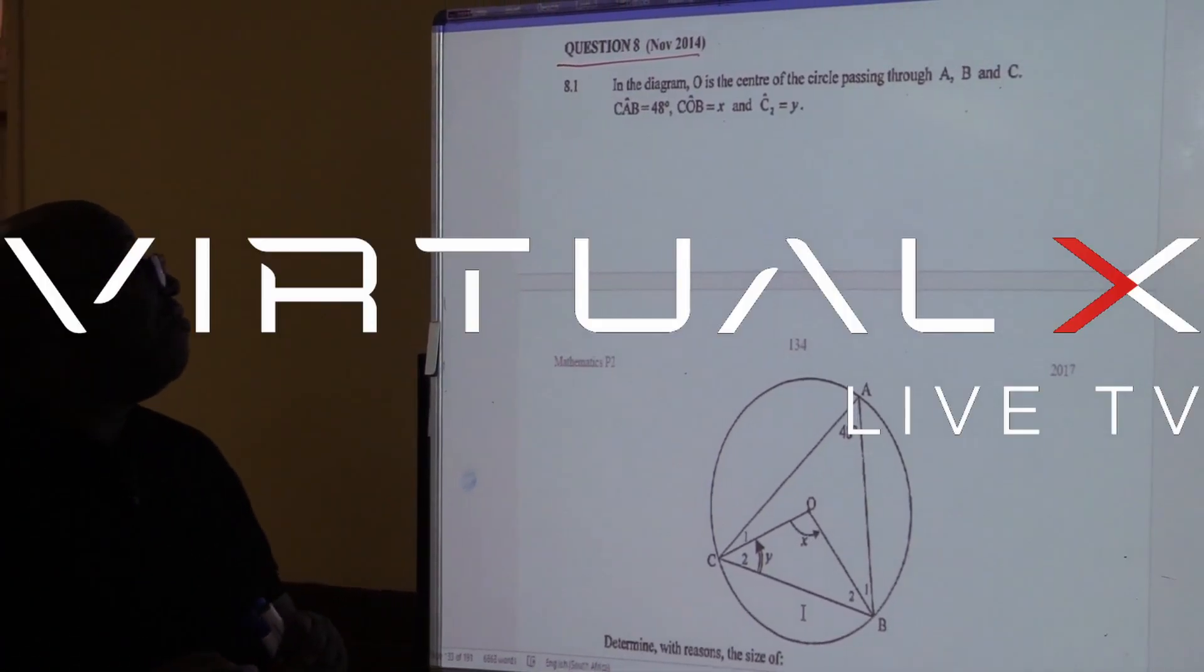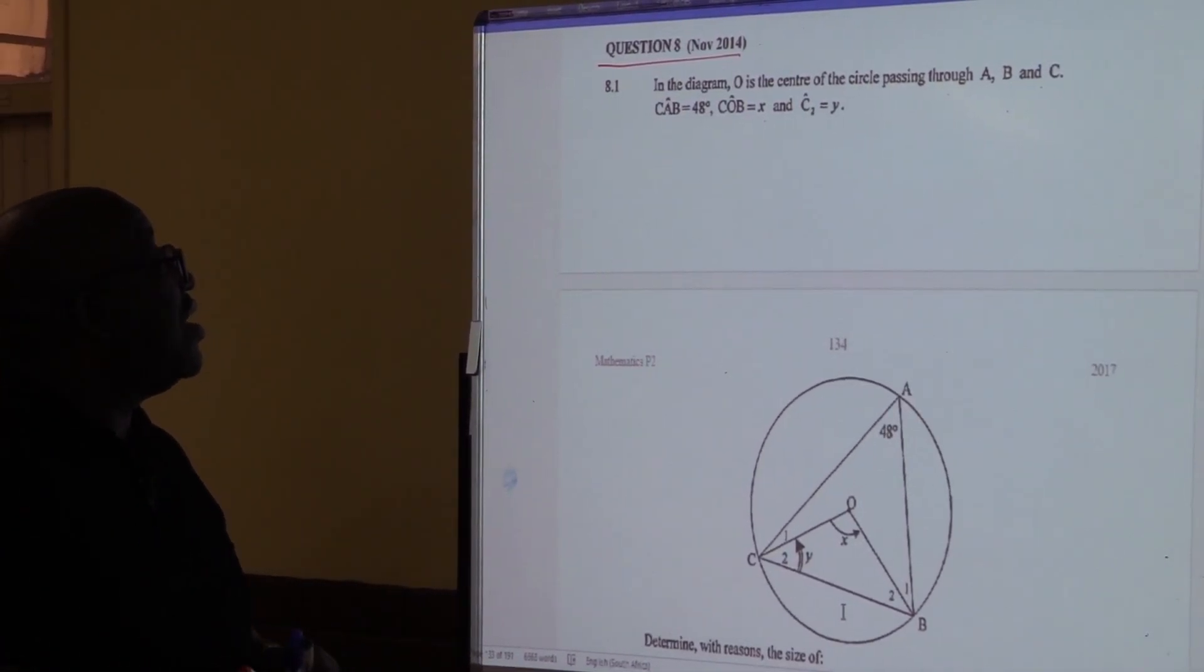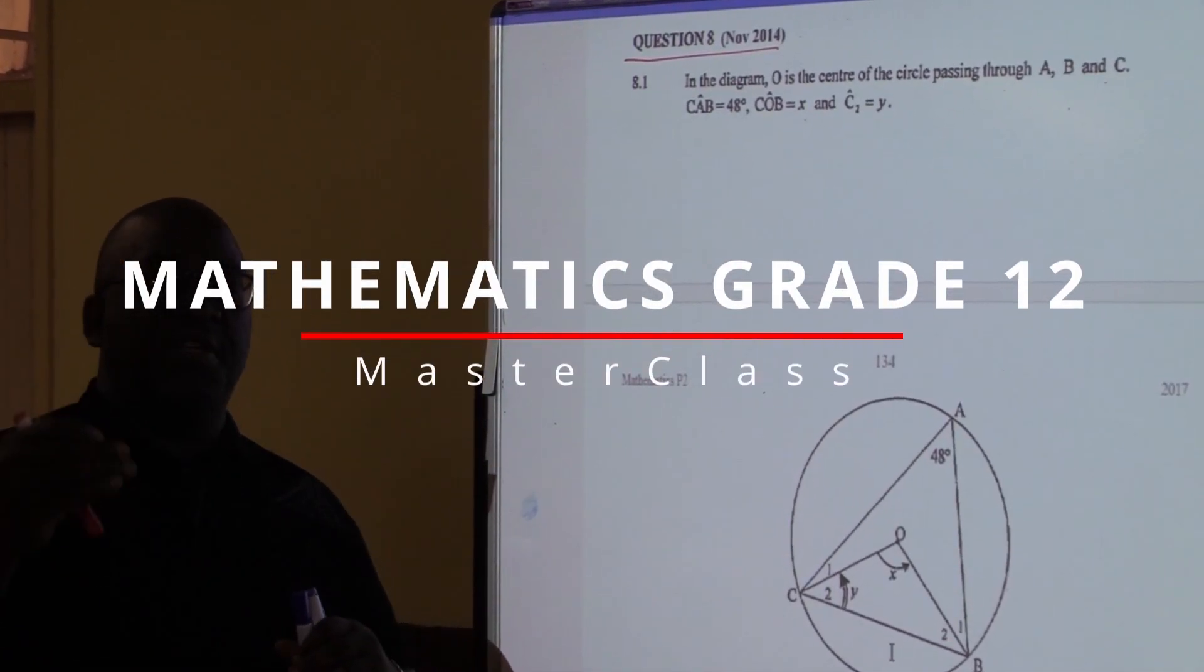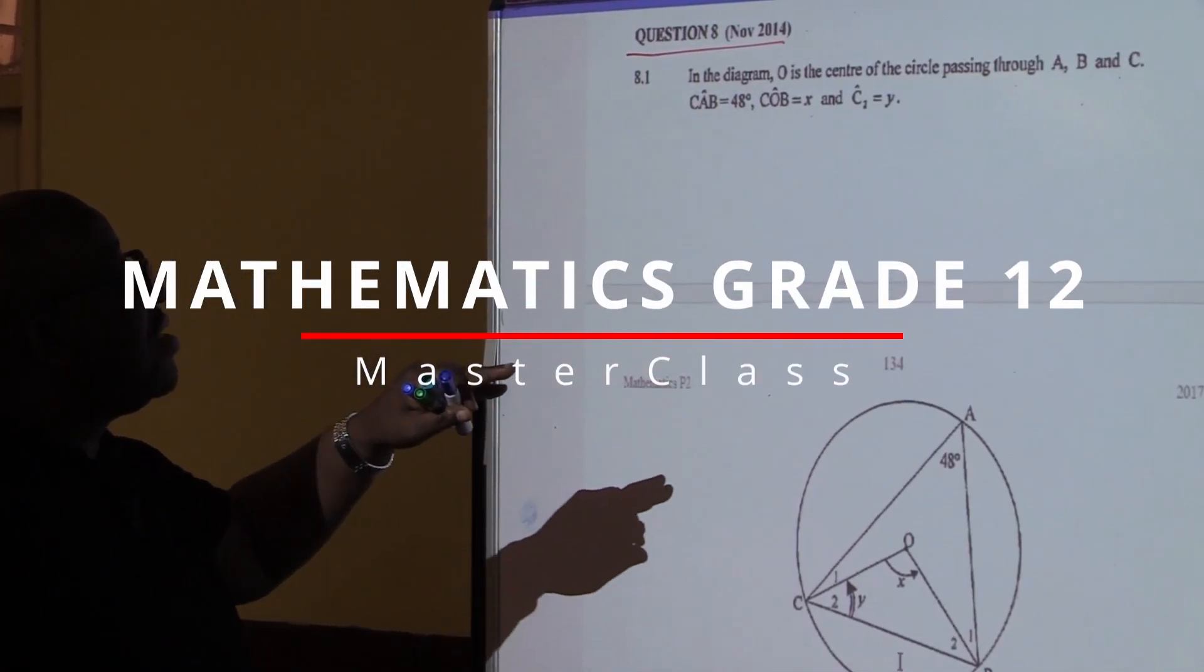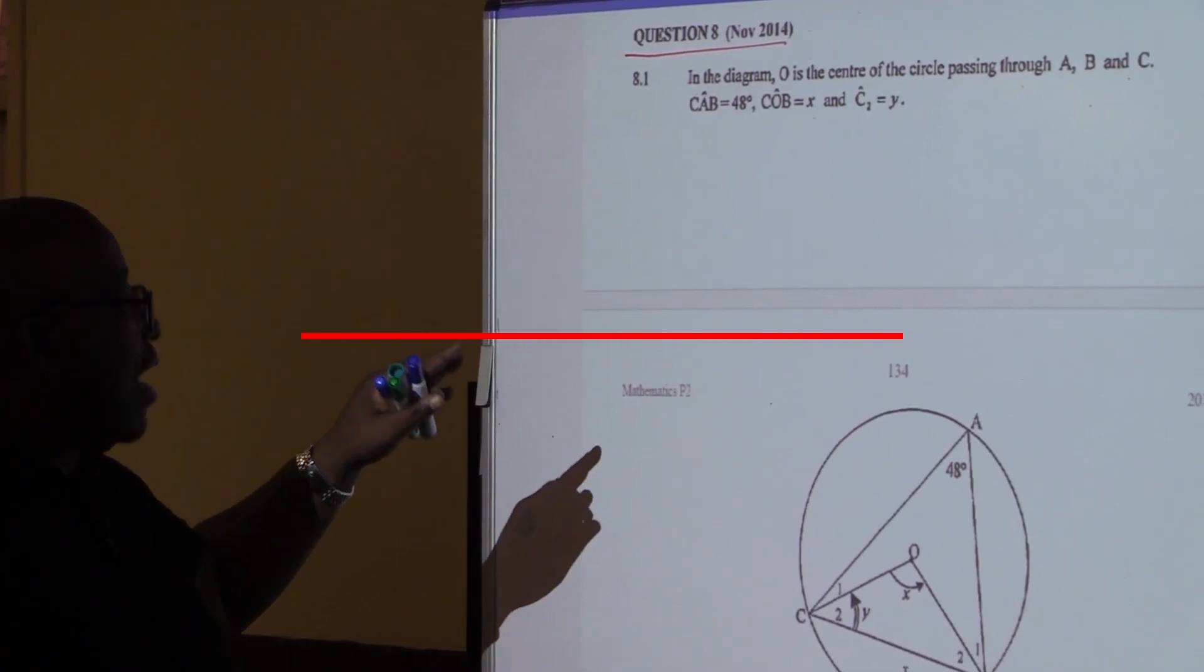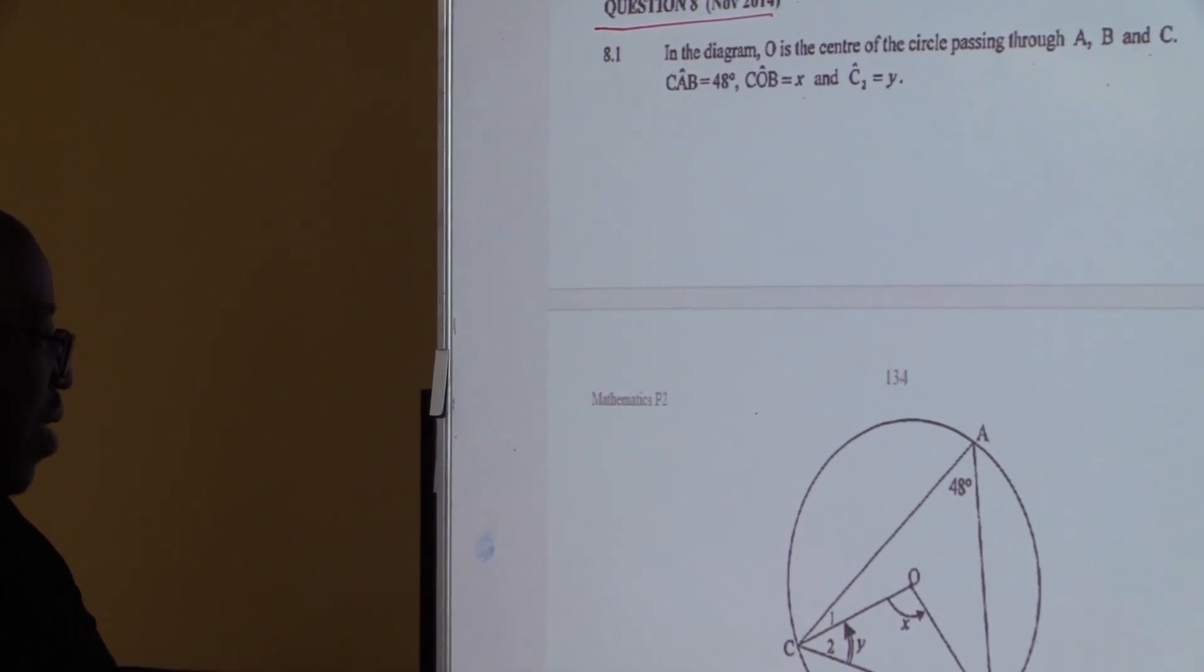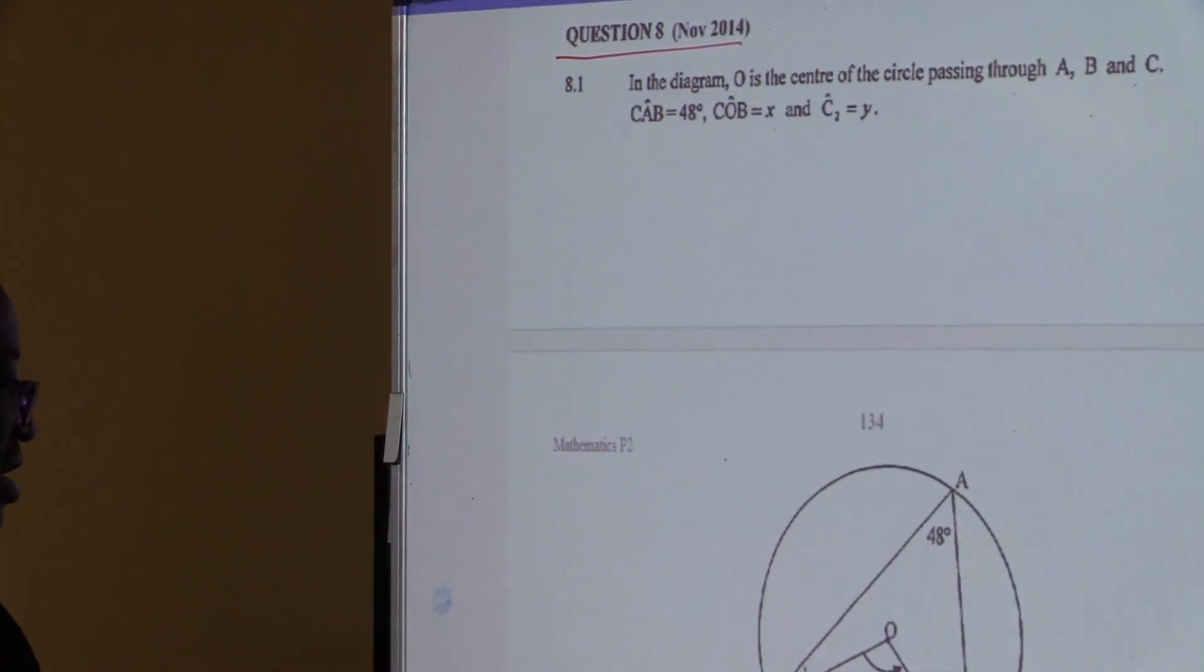Let's look at how they set this part in November 2014, it was question 8. In the diagram, O is the center. I think of center theorem passing through points A, B, C. And we are given CAB is 48, COB is X, and C2 is Y, as indicated in this diagram.